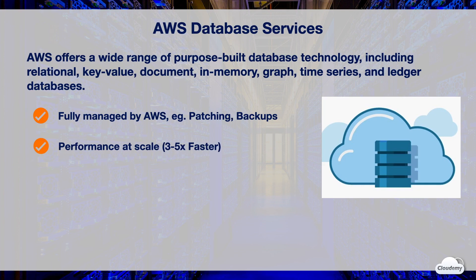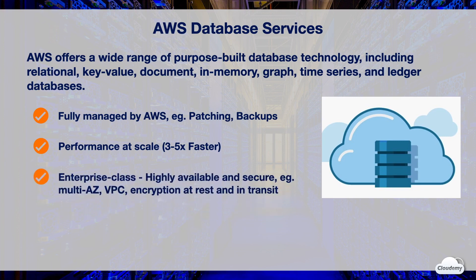AWS databases are performance-optimized, designed to be three to five times faster than standard alternatives. You can start small and easily scale your database's compute and storage as your applications grow. AWS databases are built with high availability, reliability, and security for enterprise-level applications and business-critical workloads. Most AWS databases support multi-AZ and multi-master replication. AWS provides full oversight of your data with multiple levels of security, including network isolation using VPC, encryption at rest, and encryption in transit.